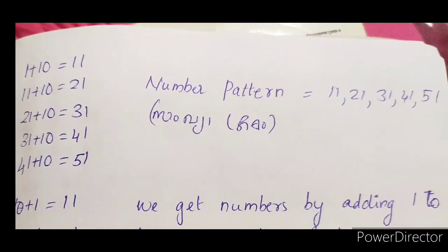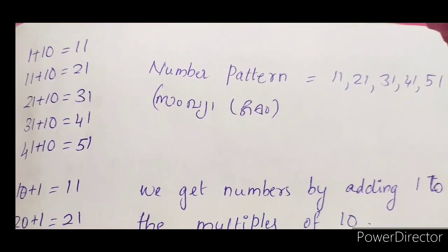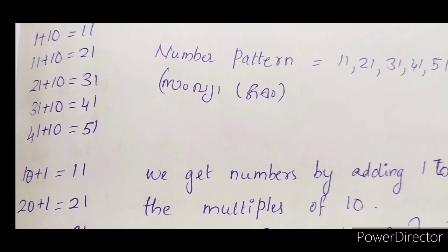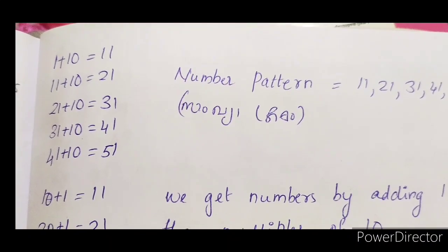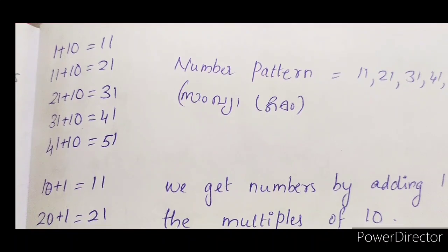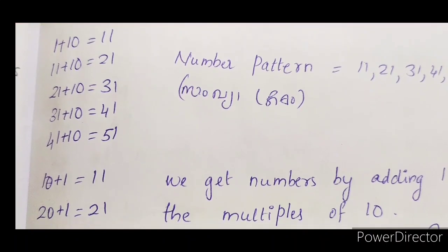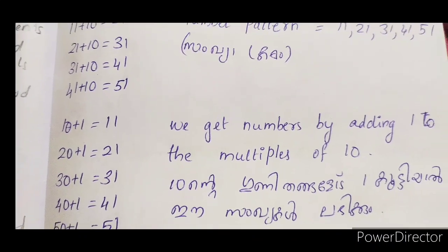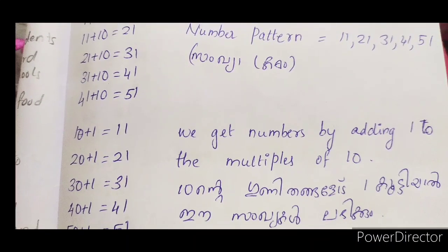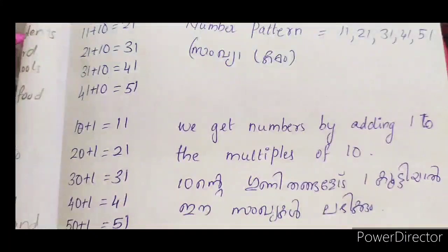So the number pattern will be 11, 21, 31, 41, 51. How do we get these numbers? We get the numbers by adding 1 to the multiples of 10. The multiples of 10 are 10, 20, 30, 40, 50.